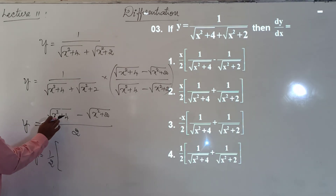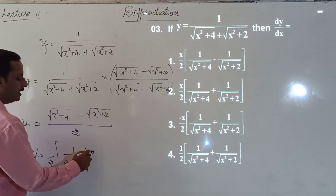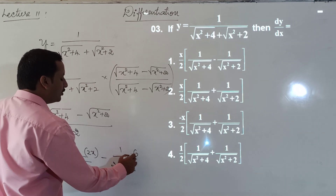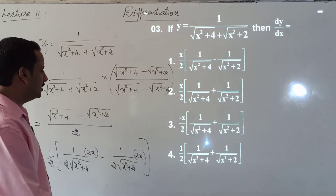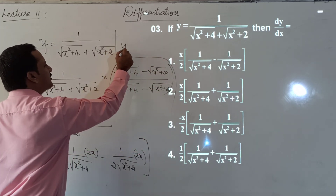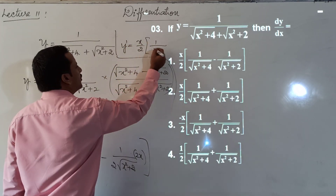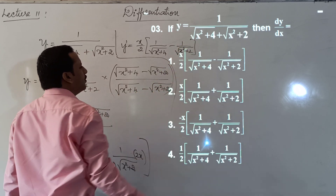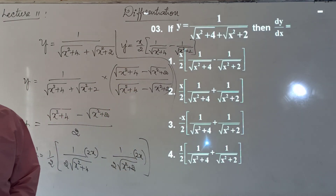Now differentiating: y' = (1/2) · [derivative of √(x²+4) − derivative of √(x²+2)]. The derivative of √(x²+4) is x/√(x²+4), and similarly for the other term. Taking x as a common factor, y' = x/2 · [1/√(x²+4) − 1/√(x²+2)], which is the first option.